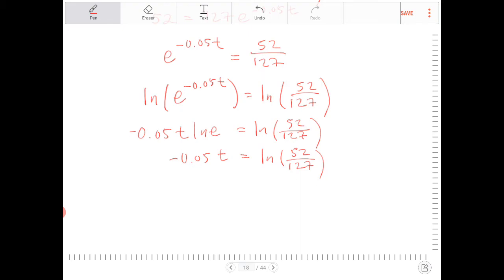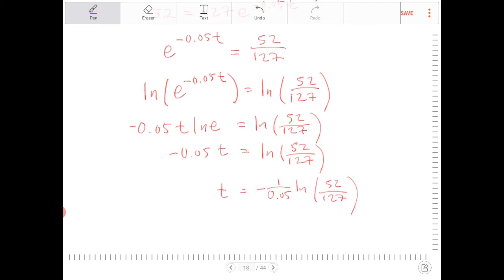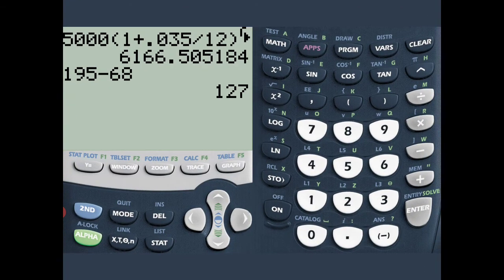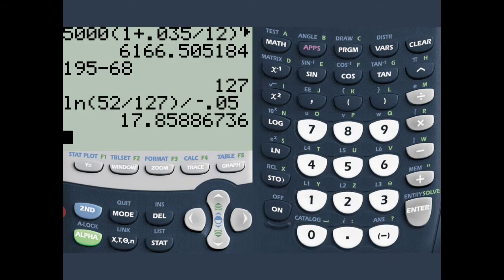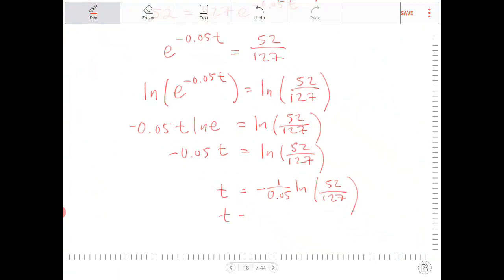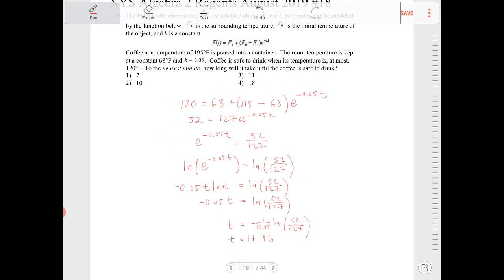Let's divide both sides by negative 0.05. We end up with t is equal to negative 1 over 0.05 ln of 52 over 127. Let's enter that into the calculator. So go to our calculator. So I have natural log of 52 over 127 divided by negative 0.05. And that would be 17.86. So 17.86. It says to the nearest minute, so that would be approximately 18 minutes then.